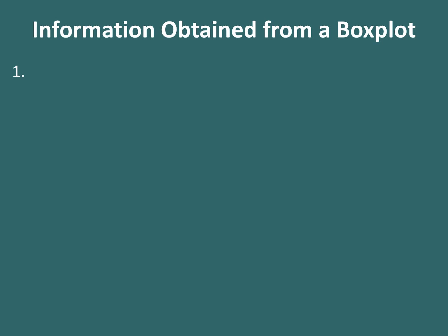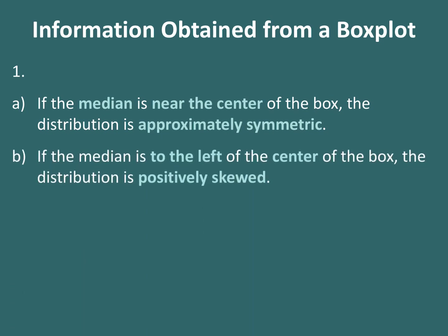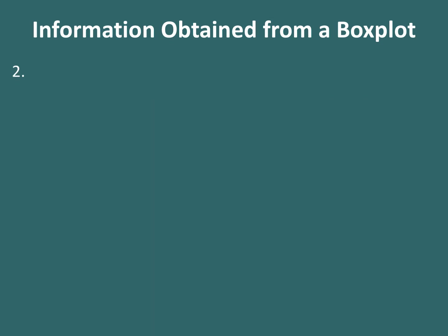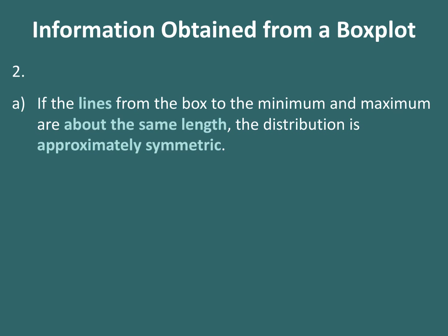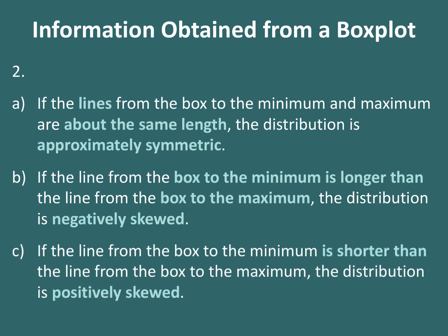Information obtained from the box plot: if the median is near the center of the box, the distribution is approximately symmetric. If the median is to the left of center, the distribution is positively skewed. If the median is to the right of center, the distribution is negatively skewed. Additionally, if the lines from the box to the minimum and maximum are about equal in length, the distribution is approximately symmetric. If the line to the minimum is longer, the distribution is negatively skewed. If the line to the maximum is longer, the distribution is positively skewed.